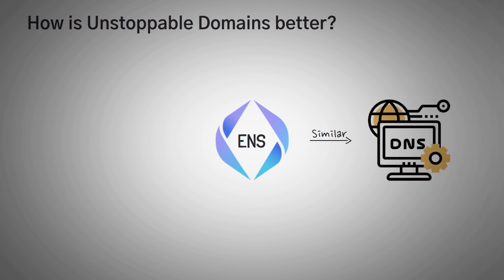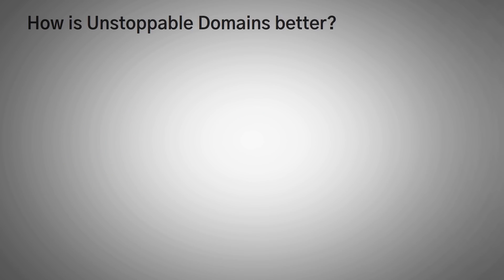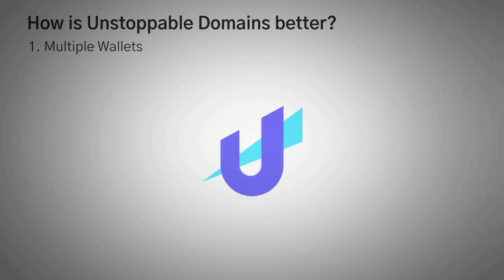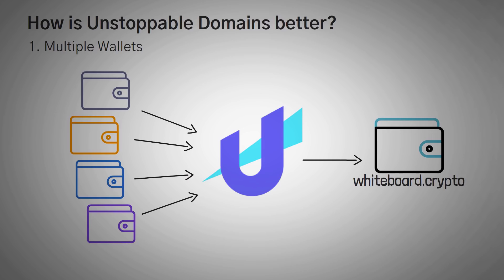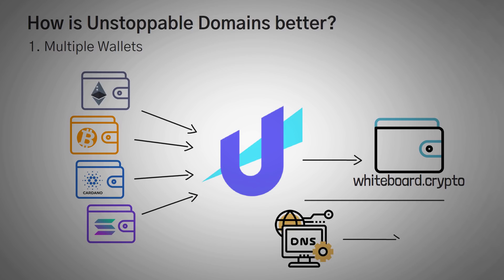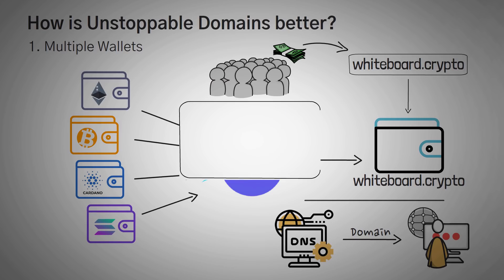As you saw in the title, this video is about Unstoppable Domains. Just like ENS is similar to DNS, Unstoppable Domains is similar to ENS. However, I've noticed it's got around four big edges that make it a little bit better. Number one: they allow multiple wallets. I think the coolest thing Unstoppable Domains does is create a multi-wallet setup. This means you can add your wallets for different coins — a whiteboard.crypto account for Ethereum, Bitcoin, Cardano, Solana, and a bunch of other coins. Any funds sent to that domain address will be sent straight to your wallet. It's worth noting ENS only works for Ethereum, not Bitcoin, Cardano, or Solana.